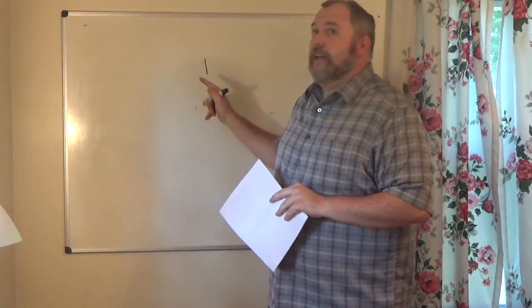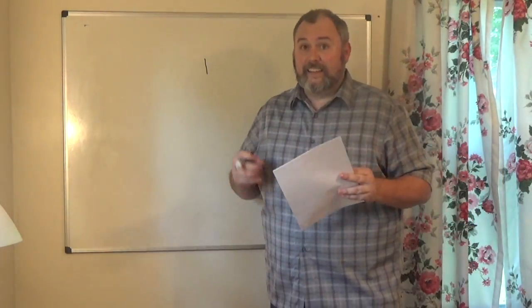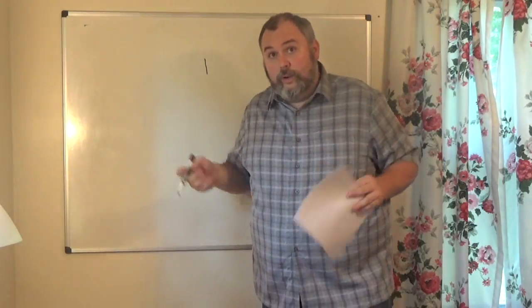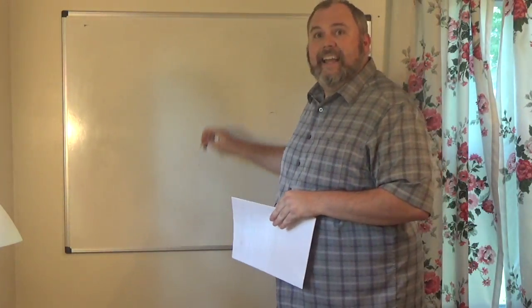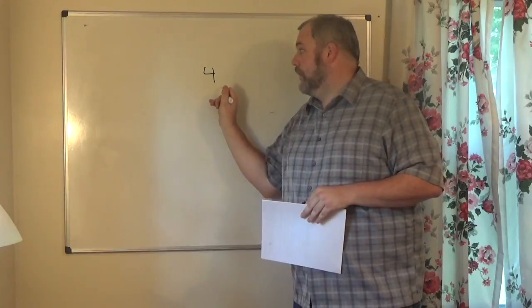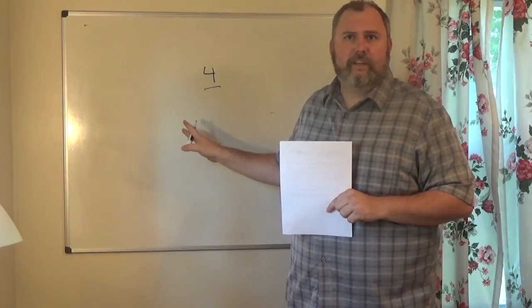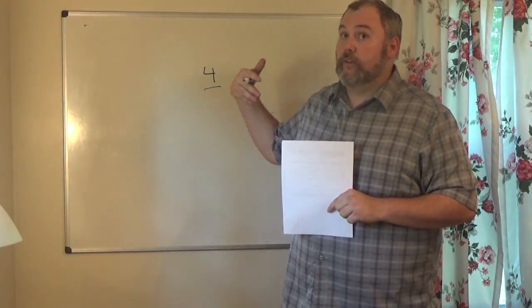Moving on — our job currently is just to count the number of significant digits a number has. The number 1 only has one significant digit because it follows rule one: digits between one and nine are always significant. If I have the number 4, the 4 is significant, and I only have one significant digit. Don't confuse this with 'four significant digits' — you only have one number, so it's only one significant digit.